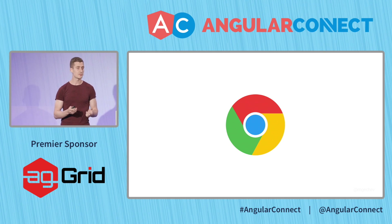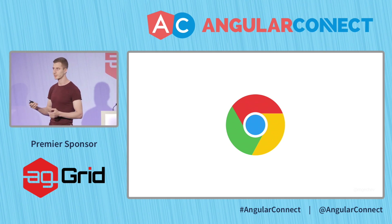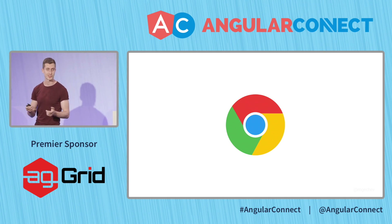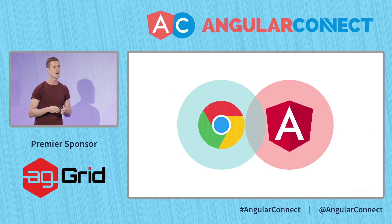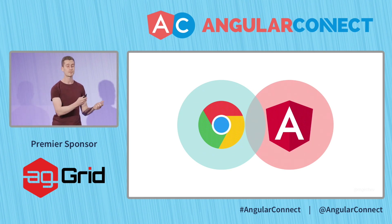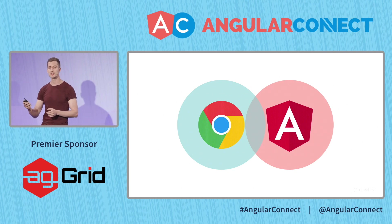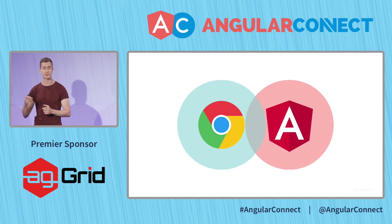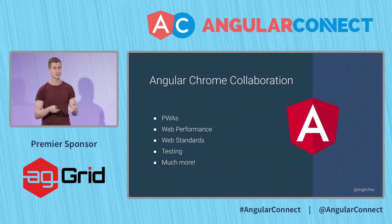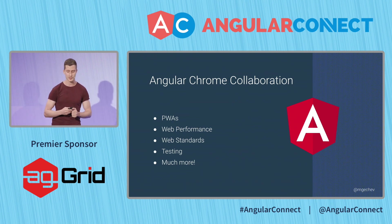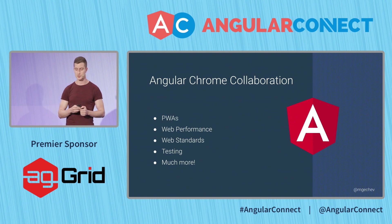One of these browsers is developed in the company where Angular comes from — this is Chrome. We have a lot of intersection points with Chrome, and we're in constant collaboration around how we can make the web faster, how we can provide richer user experiences, and much more. We've been discussing how to make powerful PWAs, web performance, web standards, testing, and much more.